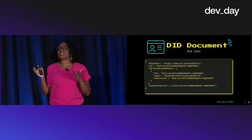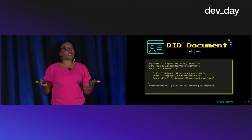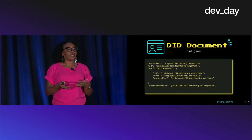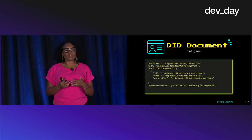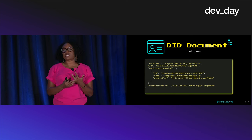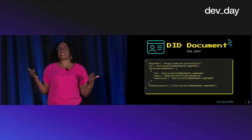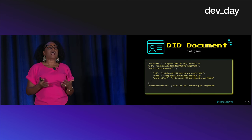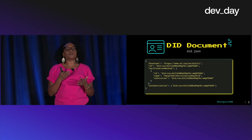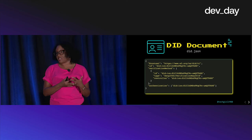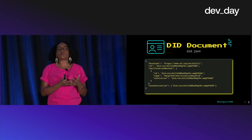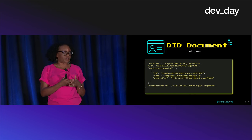The document itself is a JSON file and it describes how to engage with the DID subject. It will contain the DID subject's identifier — the DID itself — and it will also contain the public keys as well as authentication and verification methods.